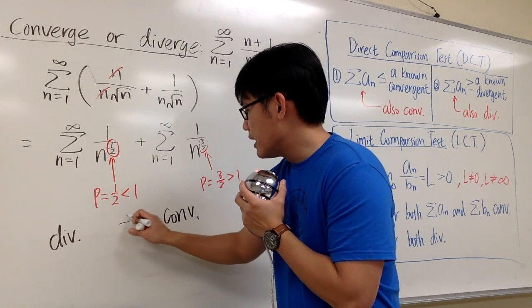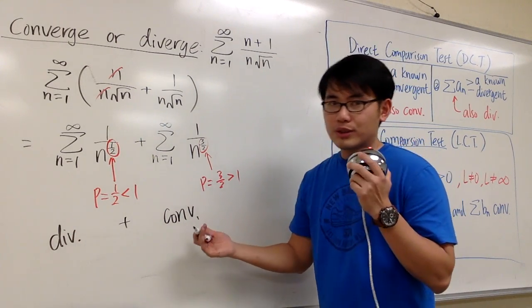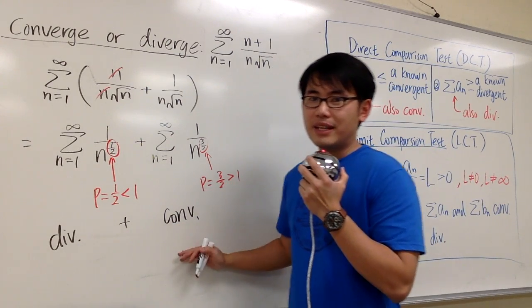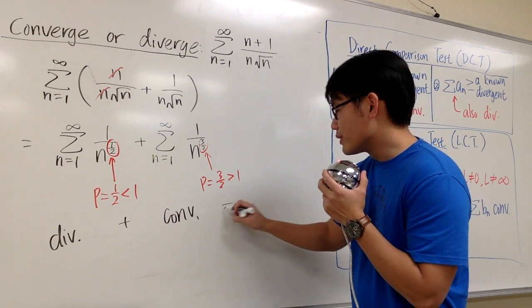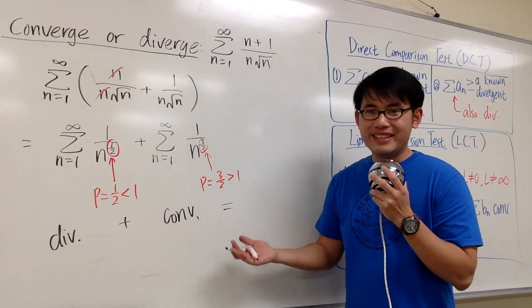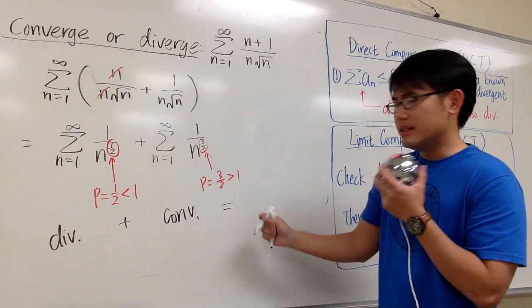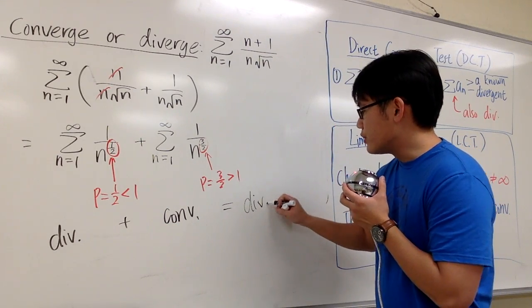If we have a divergent plus a convergent, what's the result? What's the result of infinity plus a finite number? Well, the result will still be infinity, isn't it? Therefore, divergent plus a convergent is still going to be divergent for sure.